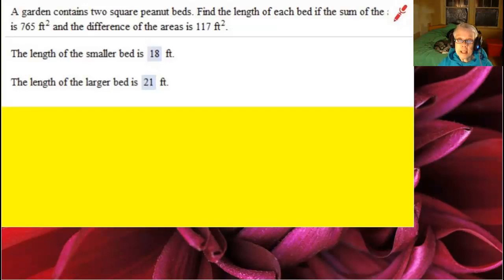Well, what they mean is that if you add the two areas together, you get 765 square feet. If you subtract the smaller area from the bigger area, you get 117 square feet.